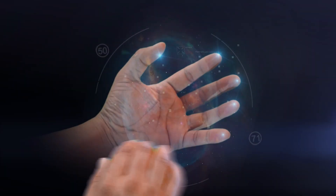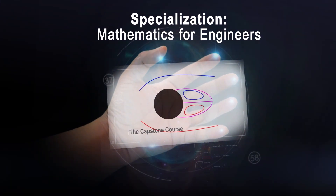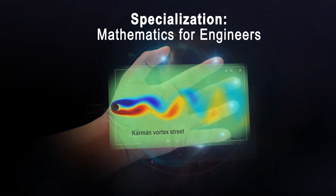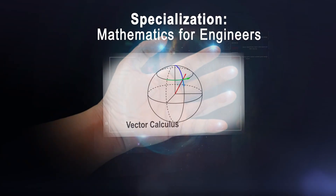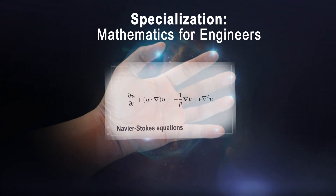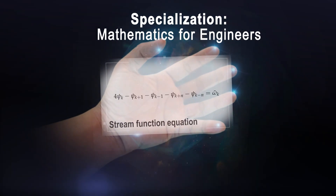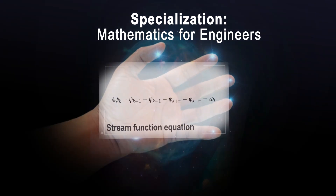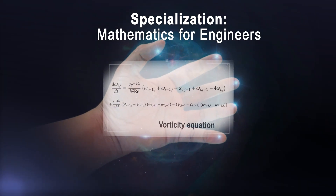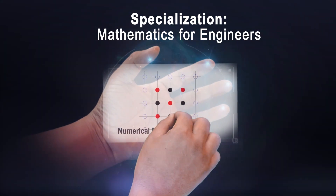All engineers need to build a solid foundation in mathematics. In the capstone course of mathematics for engineers, you'll compute the fluid flow around the cylinder. You'll need vector calculus to understand and manipulate the Navier-Stokes equations. You'll need matrix algebra to solve these equations using a finite difference method. You'll need differential equations to determine the time-evolving vorticity field. And you'll need numerical methods to write efficient MATLAB code.